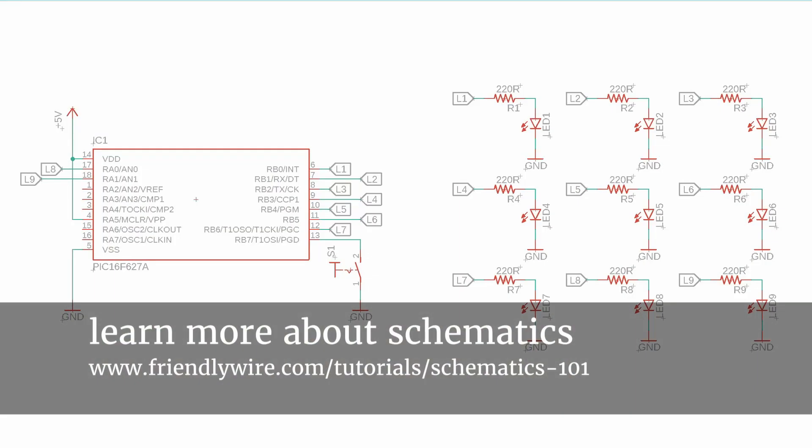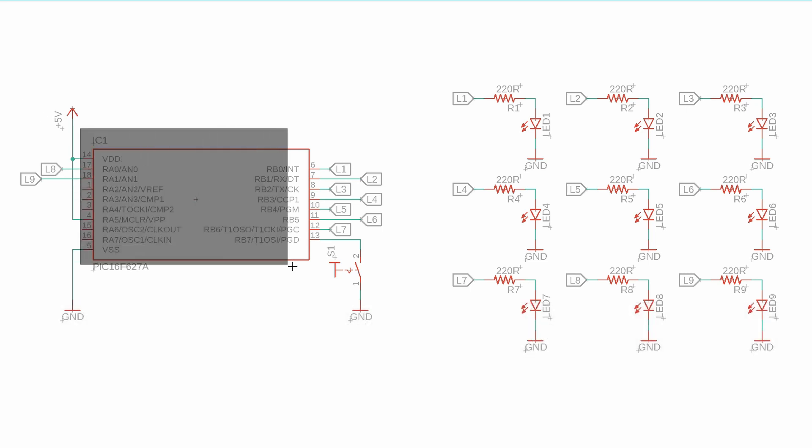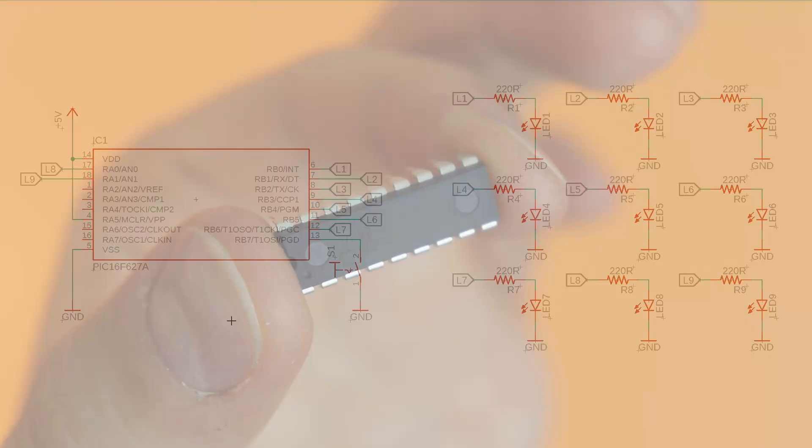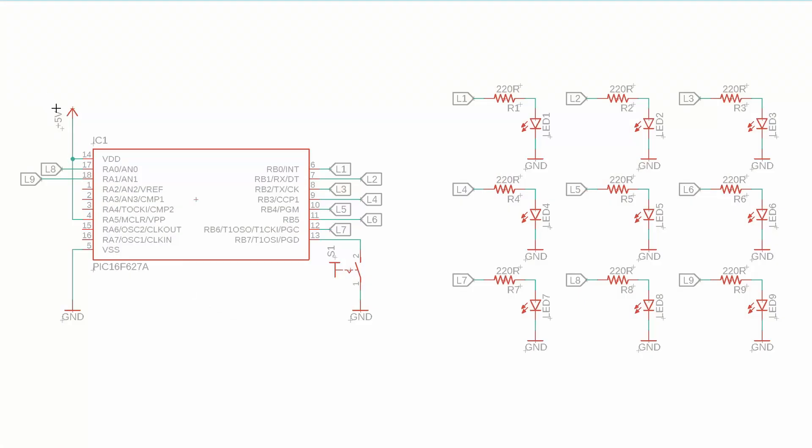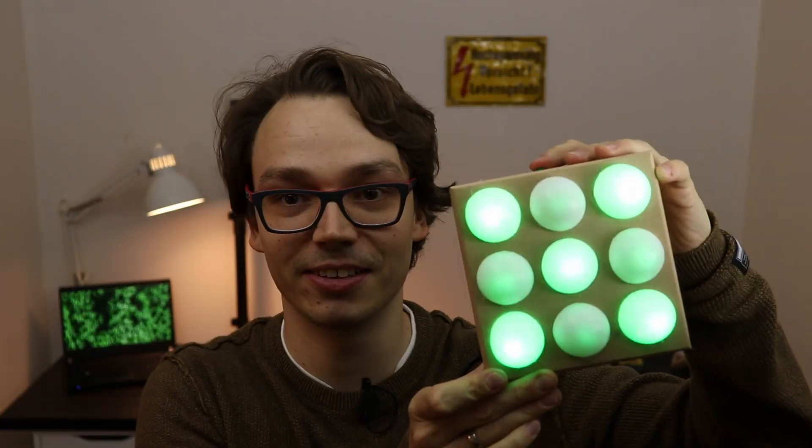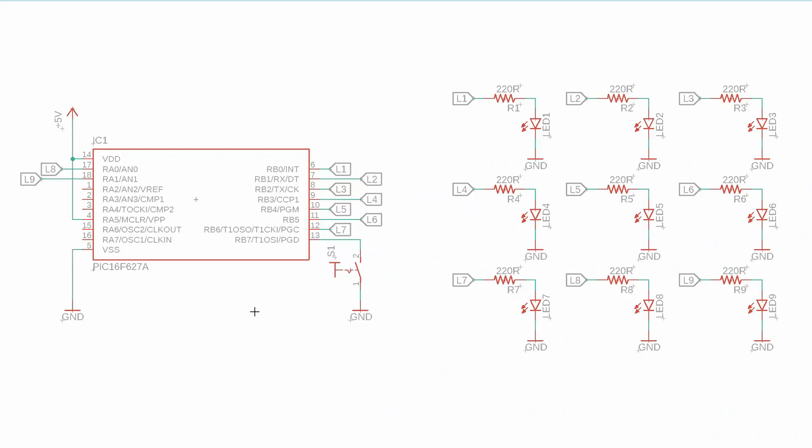This is the schematic of the electronic dice. On the left hand side, you can see the PIC16F627A microcontroller that we used last time as well. It is connected to plus five volts and ground in the usual way. You can also see a push button called S1 that connects the port RB7 to ground, and this is the green button that controls the dice. Now, what about those funny looking symbols here, L1 to all the way to L9? Well, they are the connections to the LEDs.